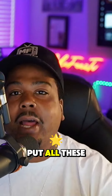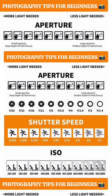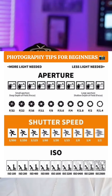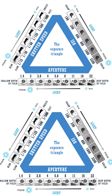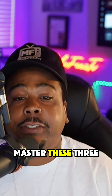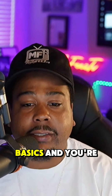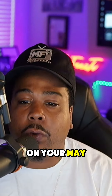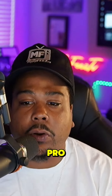If you put all these together — aperture, shutter speed, ISO — everything works in the exposure triangle. Balancing them is the key to getting great photos or video. Master these three basics and you're on your way to becoming a pro.